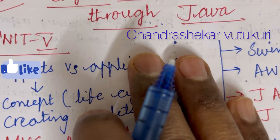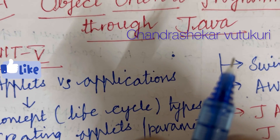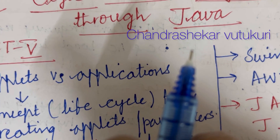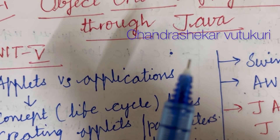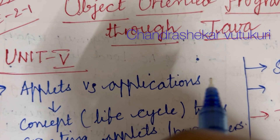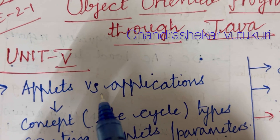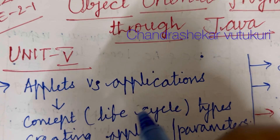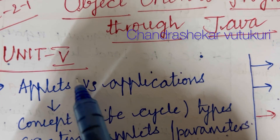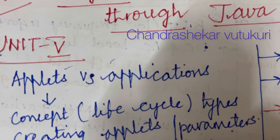I have come up with certain questions and the concepts are from unit 5. You are supposed to work out theory questions as well as the programs. The programs will be asked from this course. The fifth unit questions are like applets versus applications — it's a definite question for sure in the form of short or long.